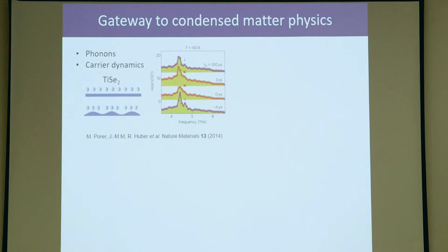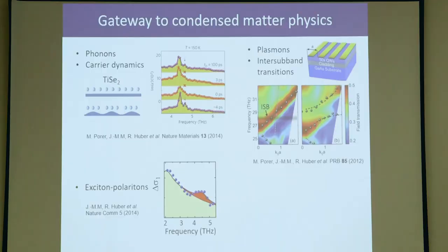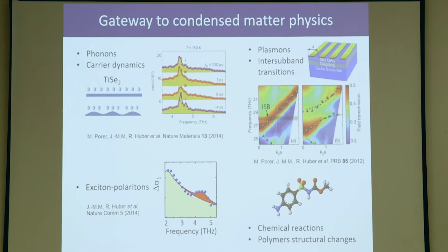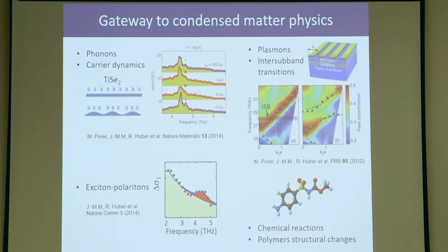With all these nice applications, there's a lot of incentive to develop better sources and detectors. This is all about the field of terahertz photonics. But in our lab, we're interested in a subfield called ultrafast terahertz spectroscopy. It's a very powerful technique to look at microscopic interactions in this energy range. You can use it to look at phonons and carrier dynamics inside 2D materials, condensing exciton polaritons, plasmonic resonances and entrance transitions in quantum wells, and chemical reactions and polymer structural changes.